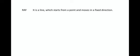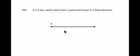Next, we have a ray. A ray is a line which starts from a point and moves in a fixed direction. Let's say there is a point A, and from this point a line moves in a fixed direction. We consider another point B out here. So AB becomes a ray, and it is represented by writing AB with a small ray drawn on top of it. Thus AB signifies a ray.